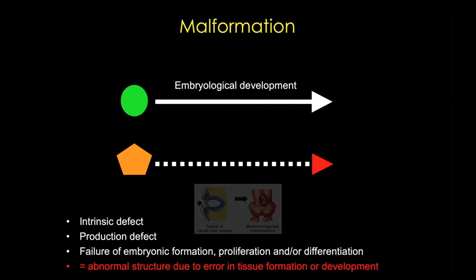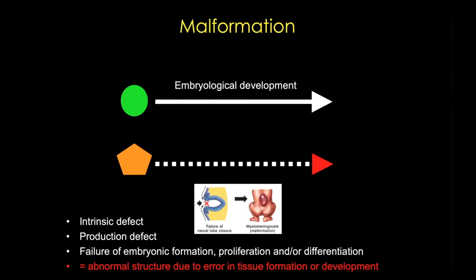The end result is an abnormal structure that results from errors in formation. One example of a malformation is the failure of the neural tube to close, which can result in a myelomeningocele, a common neural tube defect.